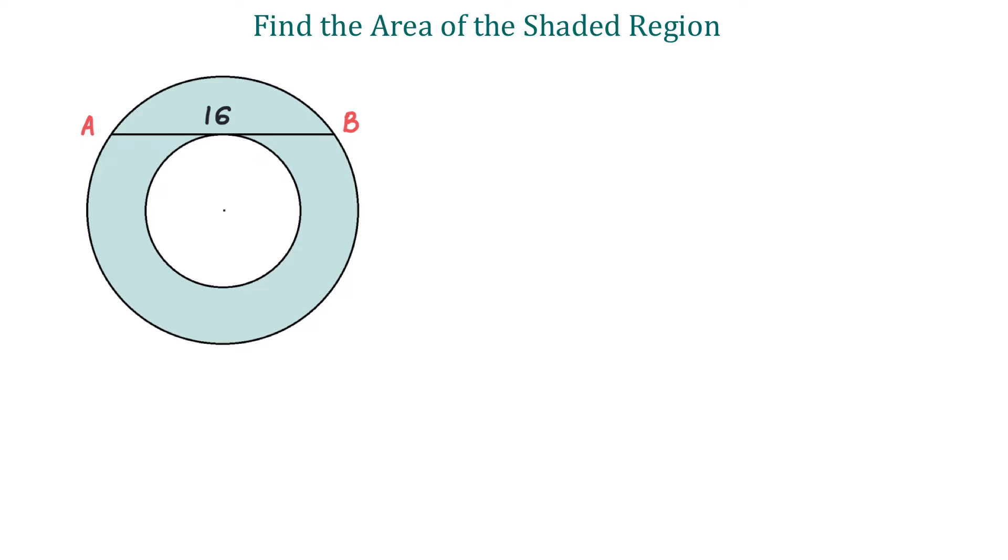We need to find the area of the shaded region, which is the area between these two circles. Notice that we are not given the radius of either circle.